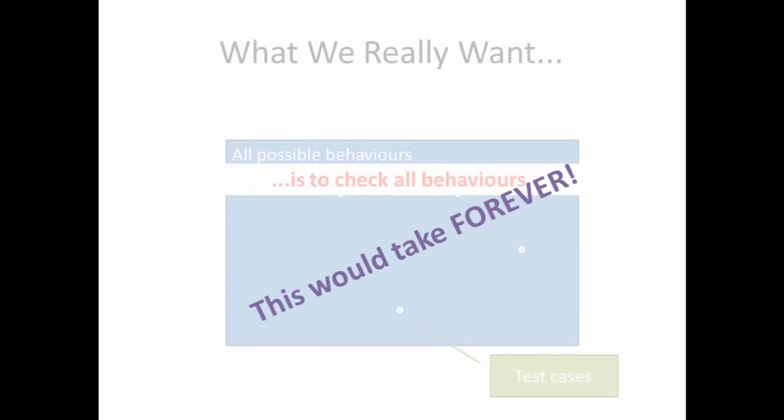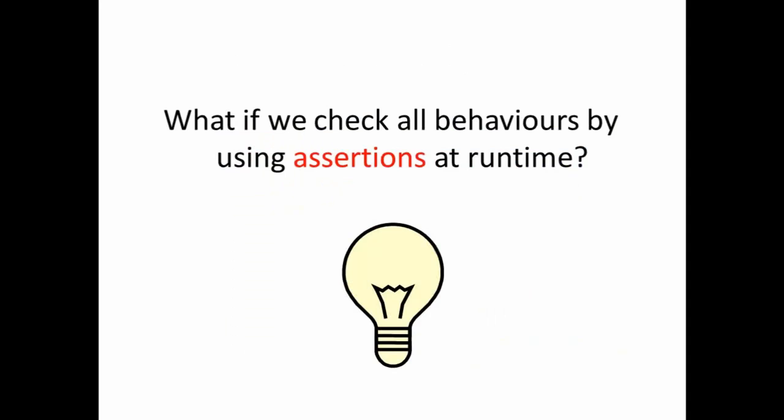No matter how much we test, we will be too optimistic to say we have foreseen all the possibilities, and there is always the limit of time — we are always pressured to go to market. What we really want is to check all behaviors, but this would take forever. So how can we go about this? One option beyond static analysis is to put assertions inside the actual running system.